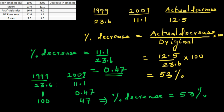To repeat: in 1999 it was 23.6, now in 2009 it is 11.1. If it was 1 in 1999, it was 0.47 in 2009. If this becomes 100 times bigger, this also becomes 100 times bigger — so if there were 100 in 1999 who were smoking, now there are only 47, meaning there is a decrease of 53 percent.